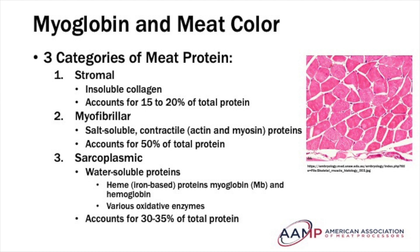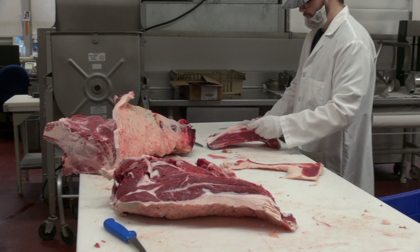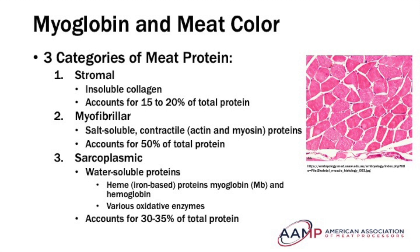After slaughtering and the conversion of muscle to meat, myoglobin's role then shifts to being the principal pigment of meat. Just as the color of meat differs from species to species, so does the amount of myoglobin present. The more myoglobin present, the darker the meat will appear. Myoglobin content is highest in beef, with less in pork and lamb, and the least amount in poultry.